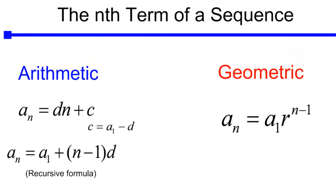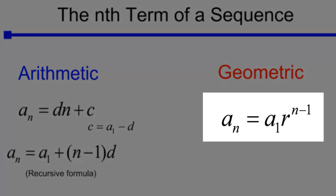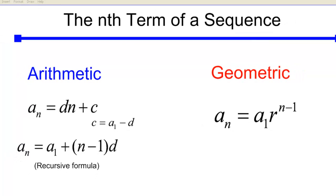With geometric, there's just one. You need the first term and you multiply that by the common difference raised to the n minus 1 power.